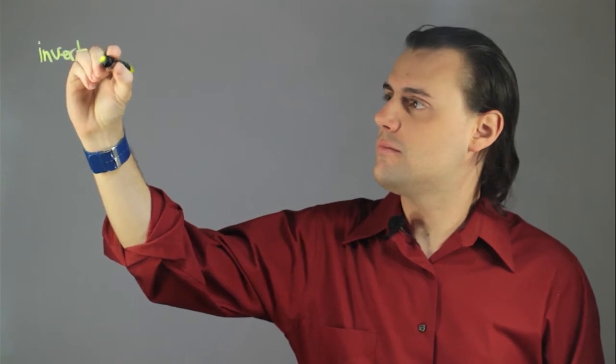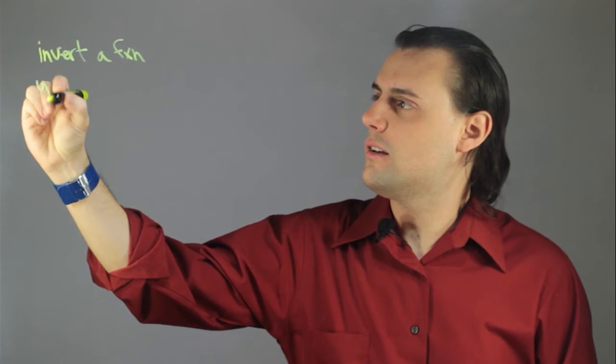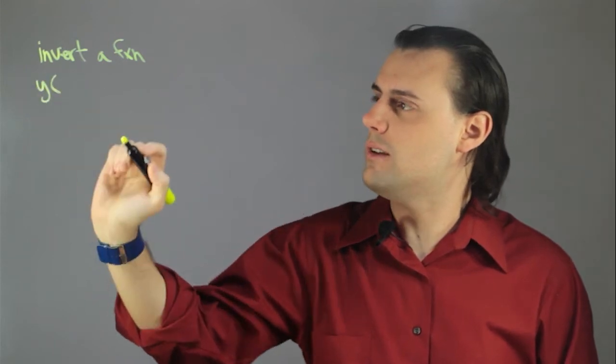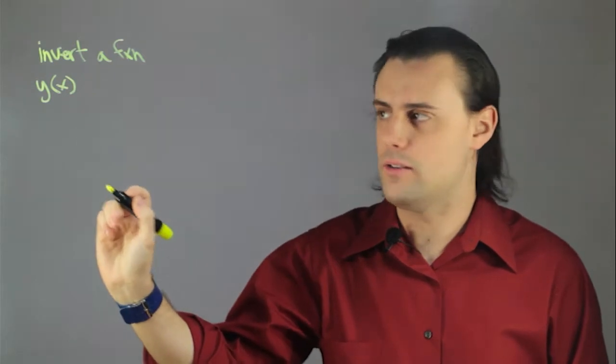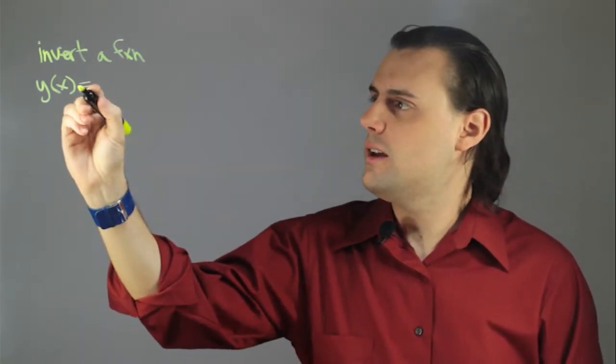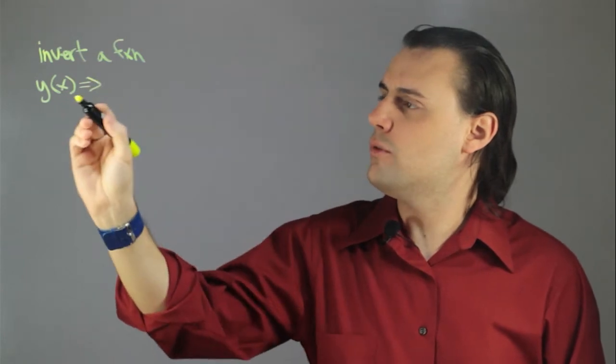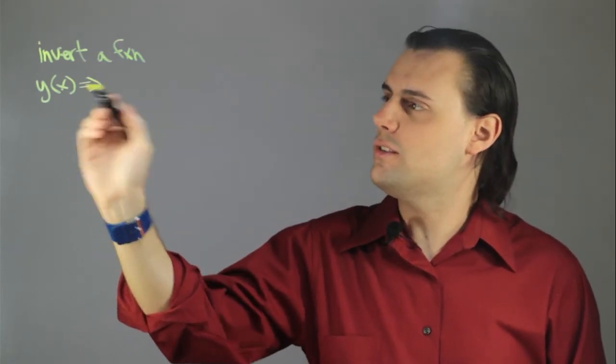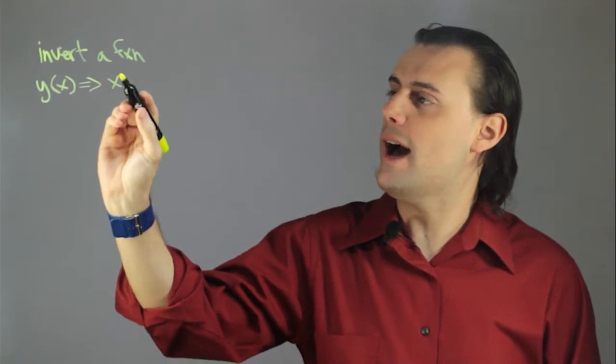So, if we consider the most basic definition, when you invert a function, what you're doing is you take some function, some dependent variable that depends on some independent variable, like x, and you want to be able to perform mathematical operations such that you end up with your independent variable as the dependent variable and your dependent variable as the independent variable.